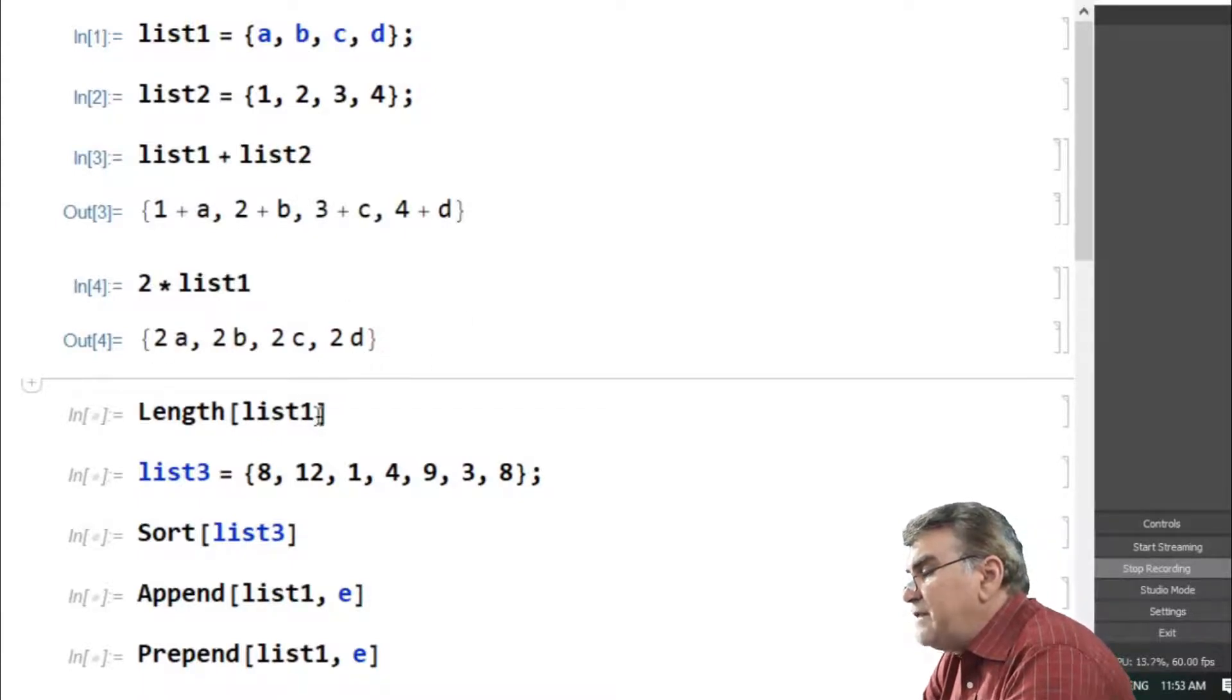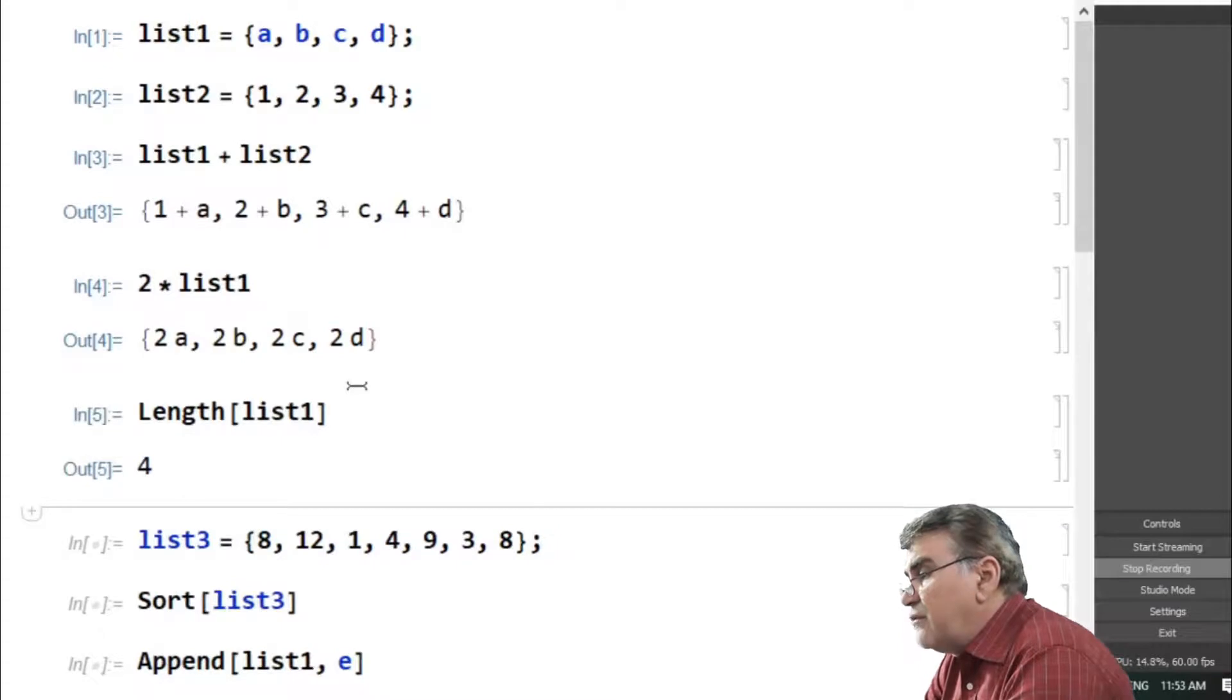For lists of very large elements, it is sometimes difficult to count the number of elements within a list. However, Mathematica does that very easily through the command length. Just enclose the list in square brackets as an argument to the command length, and it will give you the number of elements. So we see in this one there are four elements and the length command produces 4.